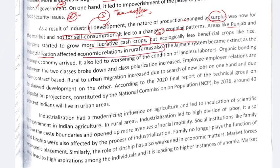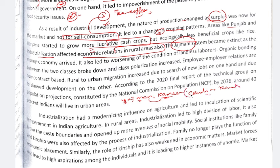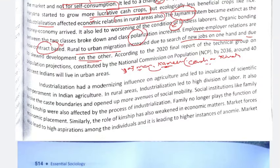Industrialization affected economic relations in rural areas — which were based on the Jajmani system, involving a Jajman and a Kamin (serving caste). The Kamin provided services and in return received cash and kind, creating an interdependent relationship based on personal goodwill. But class polarization increased and employer-employee relations became contract-based. Rural to urban migration increased due to search of new jobs and skewed development — with no development in rural areas, migration to cities increased, bringing problems of crime, disease, and environmental issues.